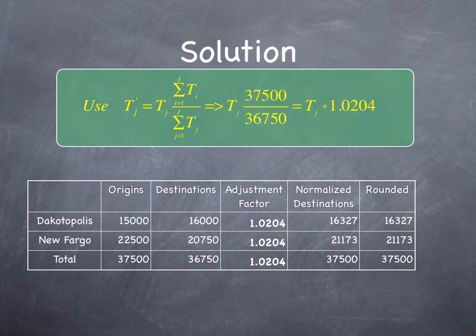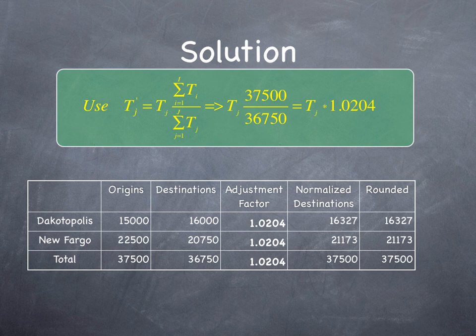So our solution is to use Tj prime. Recall that equals Tj times the ratio of the total number of trip origins to the total number of trip destinations. And that means that Tj is equal to 37,500 over 36,750, which is 1.02. So our adjustment factor is 1.0204.